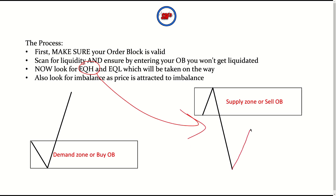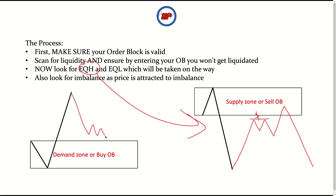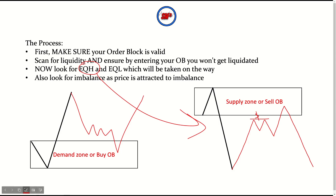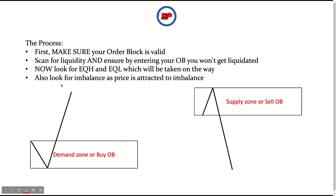For sell order blocks, we're looking for equal highs. Right here we've got a set of equal highs — same thing, price is going to come, grab those equal highs, and show us some reaction. This is a really nice scenario — a strong sell order block or supply zone. Price grabs the equal highs and takes off. That's another key thing to look for.